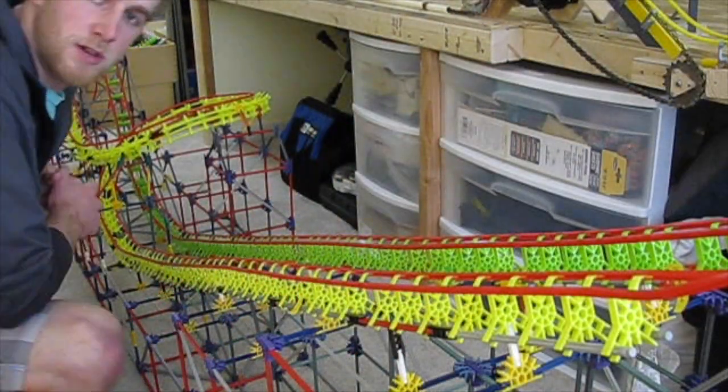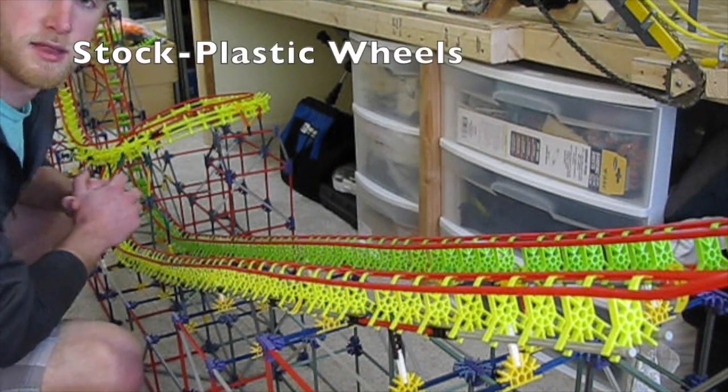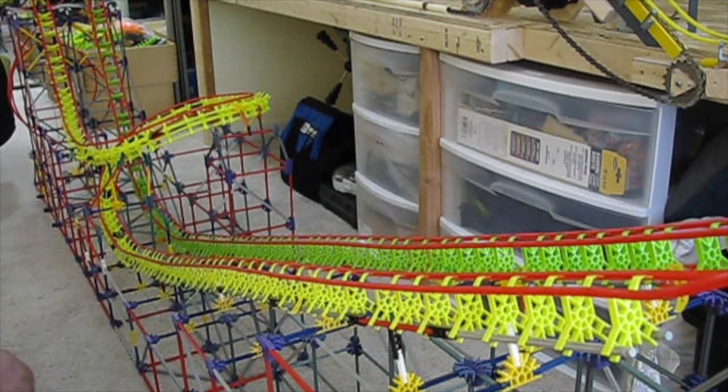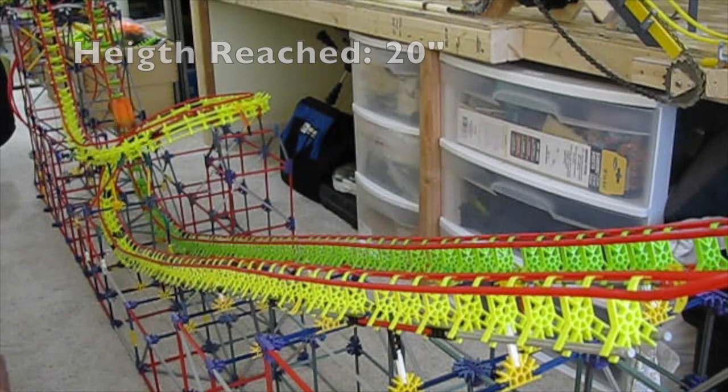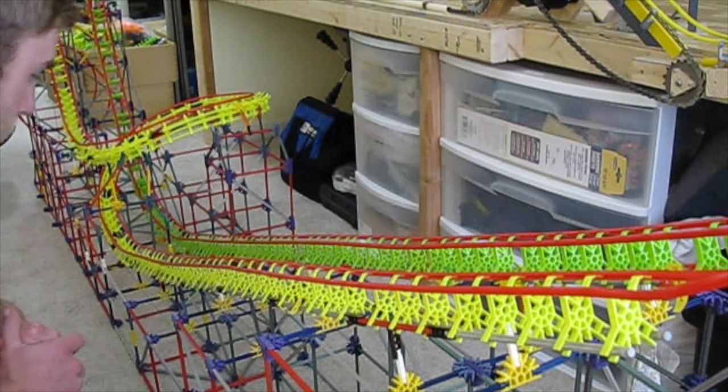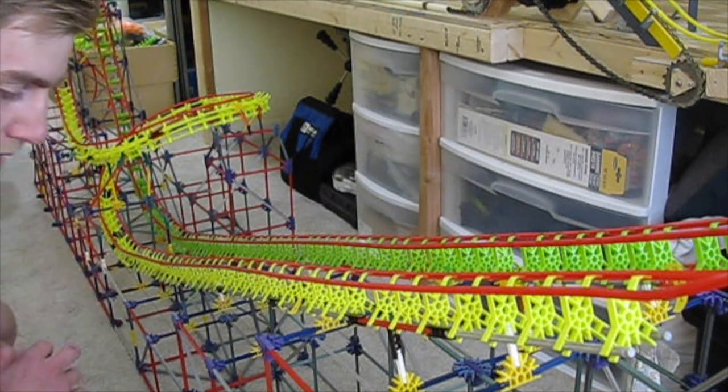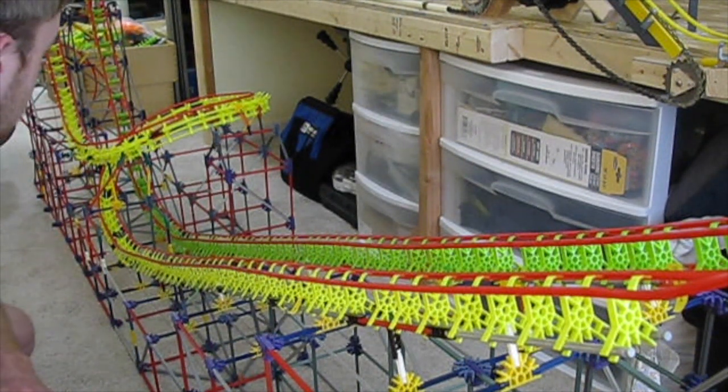First drop is the stock K'nex car, nothing to it, on the green track. Now we'll do the K'nex stock on the yellow track with the added helix to see how well it maintains its speed.